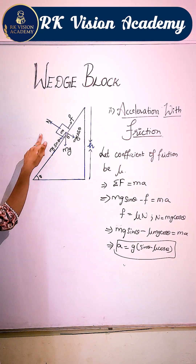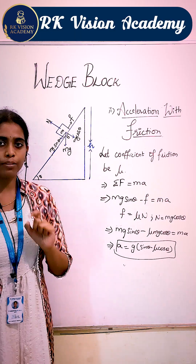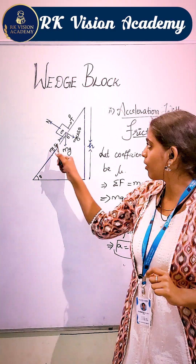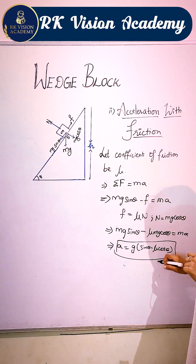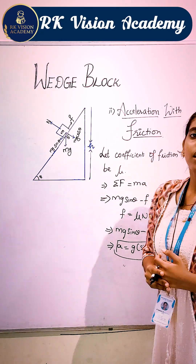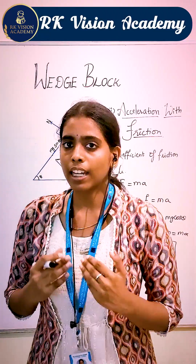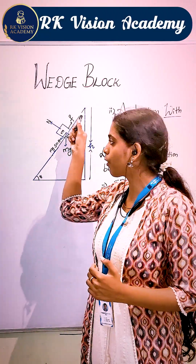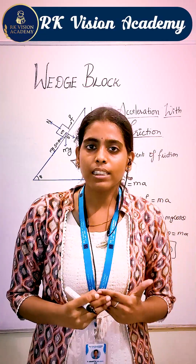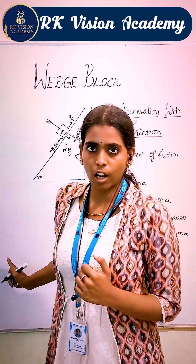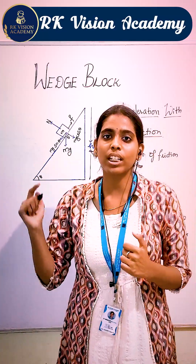So, in order for the block to slide on the wedge with friction between the block and the wedge, the acceleration of the block will be g(sine theta minus mu cos theta). In the next video, we will consider the case where this block is sliding from the inclined plane — what will be the velocity of the block when it reaches the ground, and what will be the time taken for this block to reach the ground?